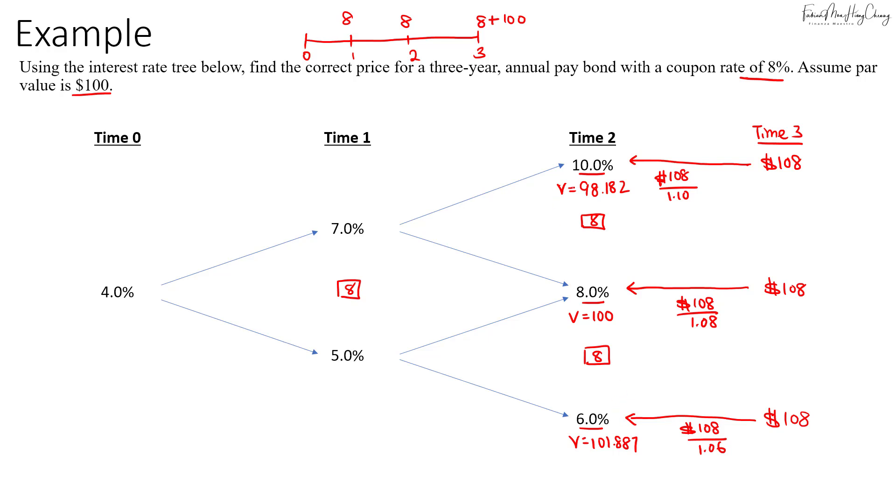Now, next thing is to discount it back again to time 1, but this time we'll take the average of each node's cash flow. So for this period in time 1, we have 7%, so we'll use this to discount these two values. We'll just take the weightage of 0.5 for each node, so just average out. I will take half to get the value here.